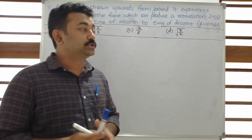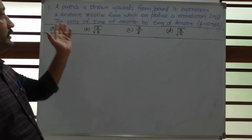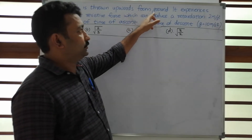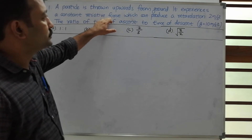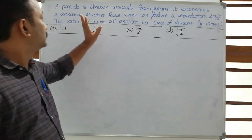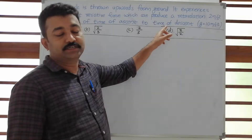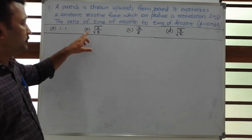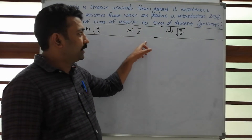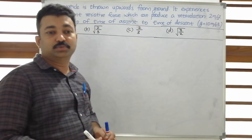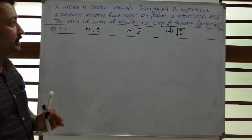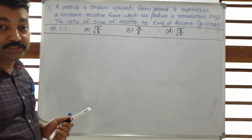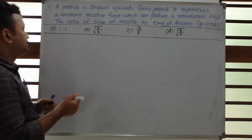We are now into the first question based on free fall: a particle is thrown upwards from the ground and experiences a constant resistive force which produces a retardation of 2 m/s². The ratio of time of ascent to time of descent is required, given G = 10 m/s². Options: A) 1:1, B) √(2/3), C) 2/3, D) √(3/2). We know ascending and descending cover the same displacement.